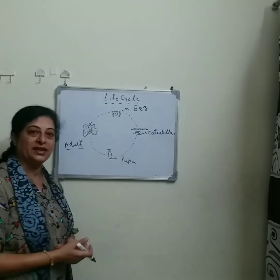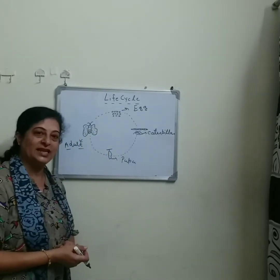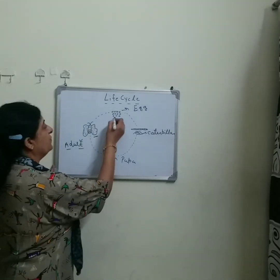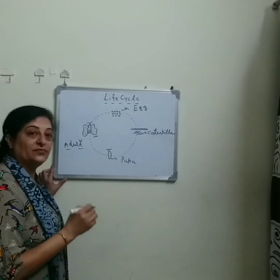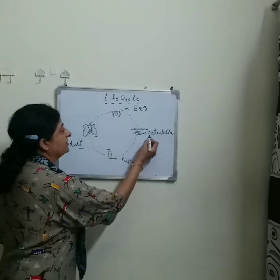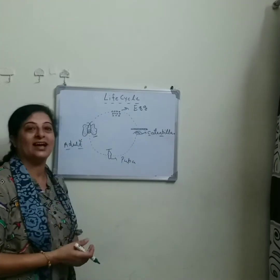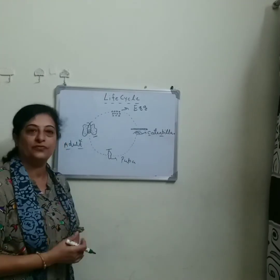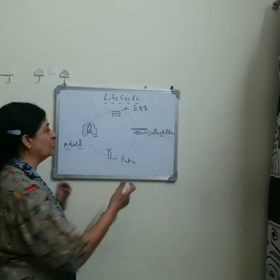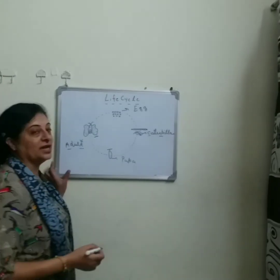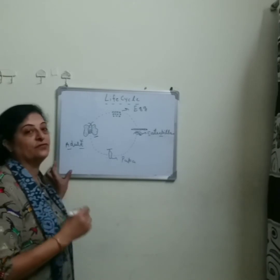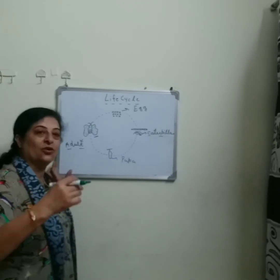First of all, the adult butterfly will lay eggs. After some days, from the egg, little caterpillars hatch out. These caterpillars feed on the leaves of the trees, and they start feeding on the leaves when they grow up.